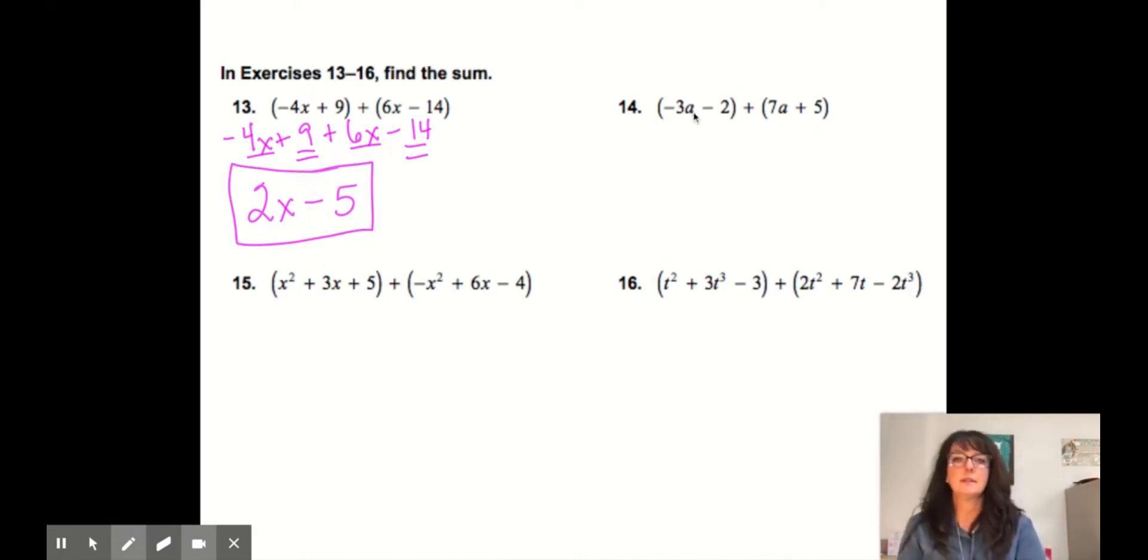Moving right along. Why don't you try number 14? What is the simplified form for number 14? Or 15, okay? If I look at this, I have squared, exponent 1, exponent of 1, exponent of 0, squared, 1, 0. So these first two terms become the leading term.